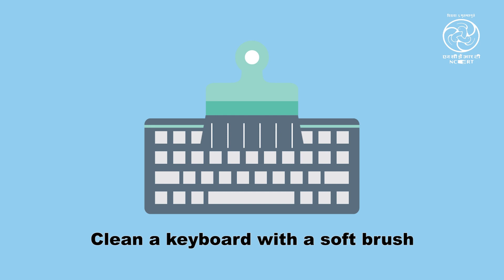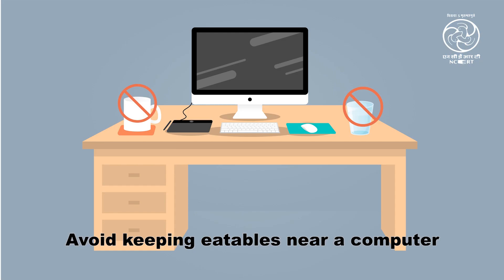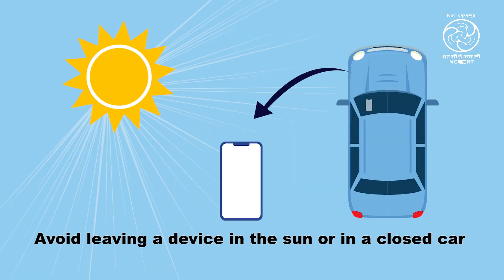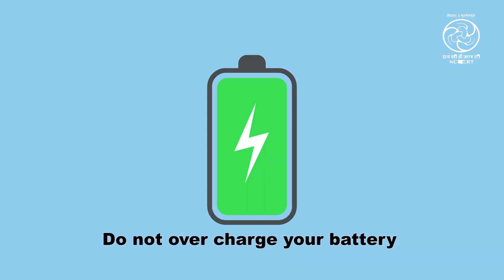The ways to prevent the device from these damages may include, but are not limited to, the following: clean a keyboard with a soft brush and using a vacuum cleaner; avoid eating and keeping glasses of water or cups of coffee near the computer or the keyboard; handle and move your device carefully; avoid leaving a device in the sun or in a closed car, and do not overcharge your battery.